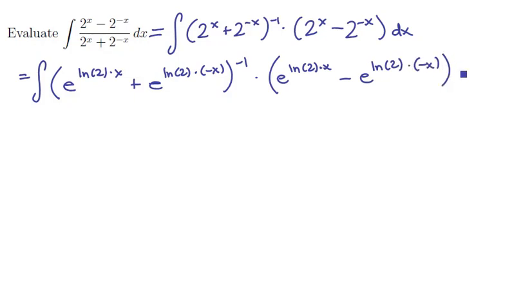Once we're prepped, we're left with this horrific expression: the integral of e to the ln 2 times x plus e to the ln of 2 times negative x quantity to the minus 1 times e to the ln of 2 times x minus e to the ln of 2 times negative x, all times dx.